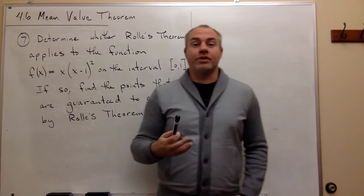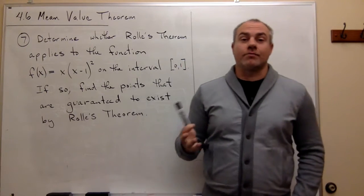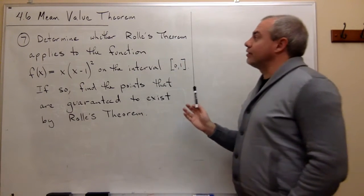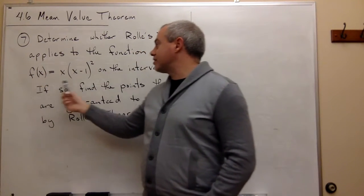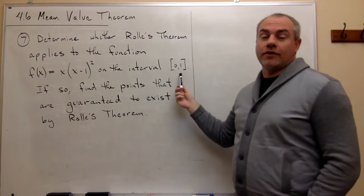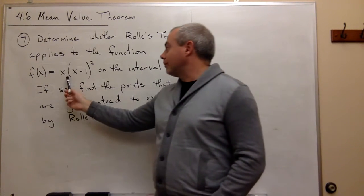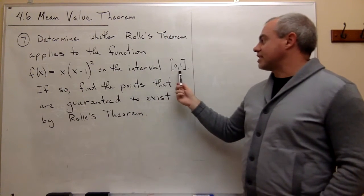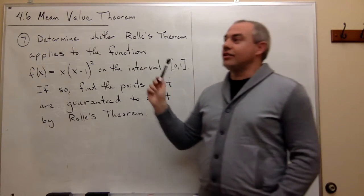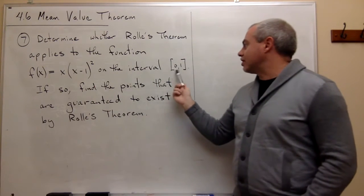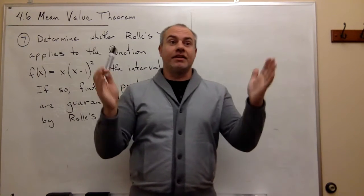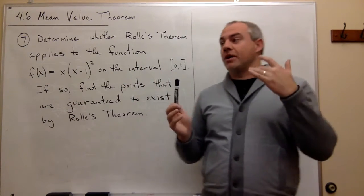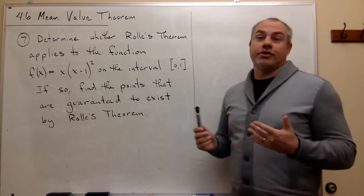So real quick, maybe we should just think about what Rolle's theorem says for a second. Basically, Rolle's theorem says if this function is continuous on this closed interval, and it's differentiable on this interval except open, and the two endpoints at 0 and 1 of this function, if they're the same, then somewhere in between there must be a point where the derivative is 0.